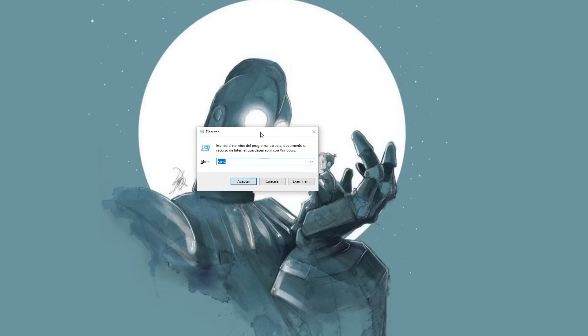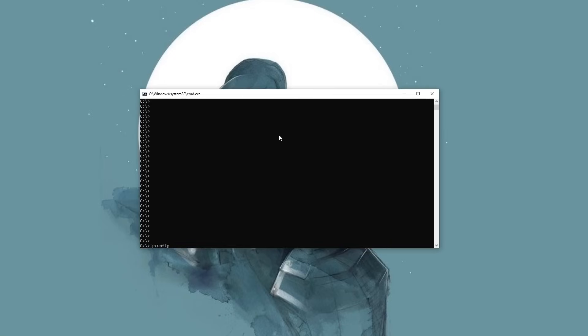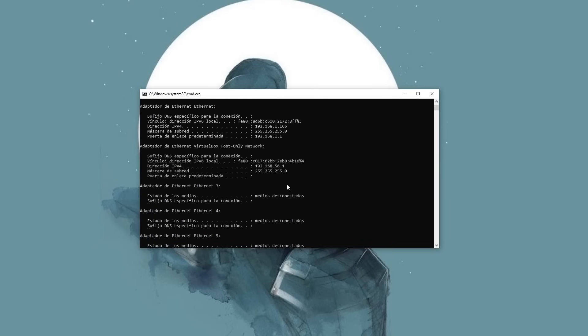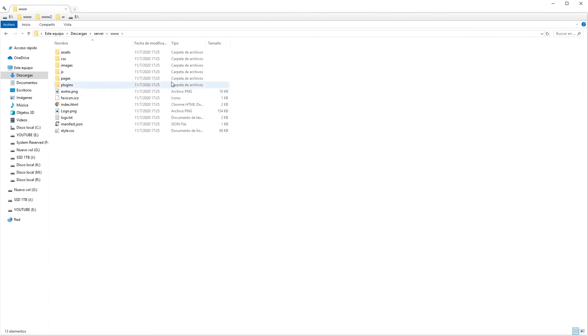Now we press the combination of Windows plus R keys. We write CMD and then we write ipconfig. A list like this will appear and you will copy where it says ipv4 address there. You copy the IP numbers. But doing this with your computer will only work as long as your computer is on. If your computer is off, your clock will not work.